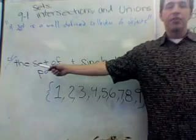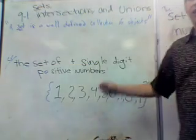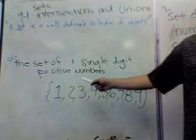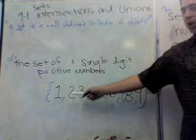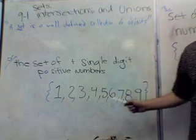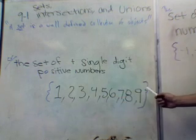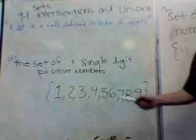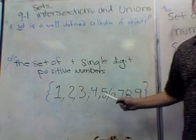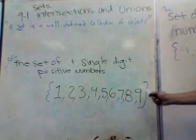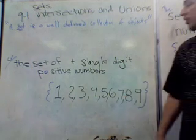Let's give an example. First of all, the set of single-digit positive numbers are 1, 2, 3, 4, 5, 6, 7, 8, 9 — if you like French.